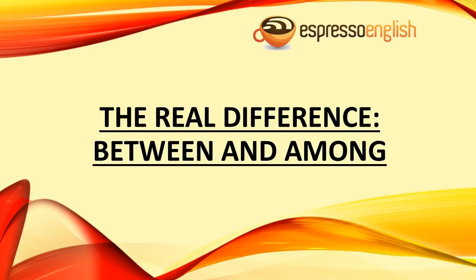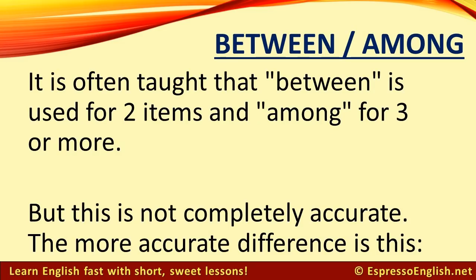The real difference between and among, from EspressoEnglish.net. It is often taught that between is used for two items and among for three or more. But this is not completely accurate. The more accurate difference is this.